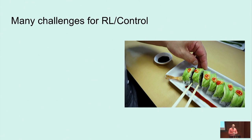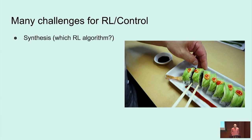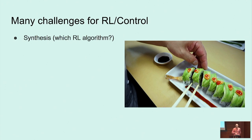There are many challenges for RL and control in this manipulation space. One of them is what algorithm should we use for designing the policy — whether it's RL or control or anything in between. But actually there's a bunch of secondary questions that are so important, I think they're defining in this space.